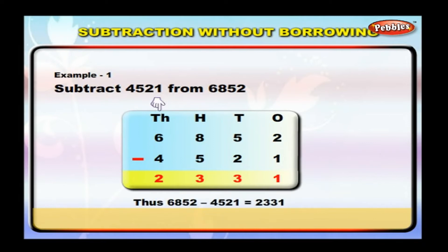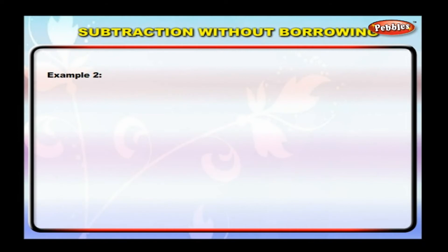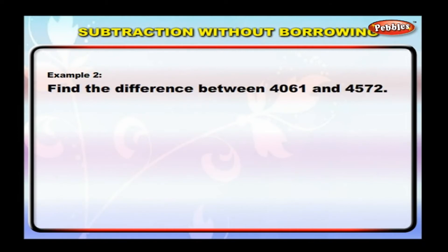Six thousand eight hundred and fifty-two minus four thousand five hundred and twenty-one is equal to two thousand three hundred and thirty-one. Example two: find the difference between four thousand sixty-one and four thousand five hundred and seventy-two.